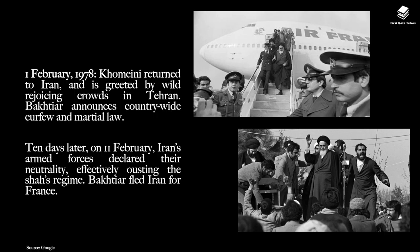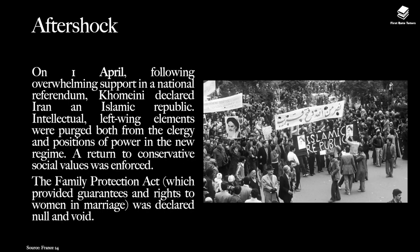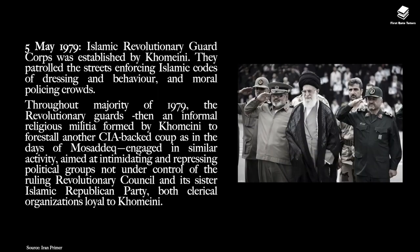Bakhtiar, the Prime Minister, announced a countrywide curfew and martial law, but 10 days later Iran's armed forces declared their neutrality, effectively ousting the Shah's regime. On 1 April 1979, following overwhelming support in a national referendum, Khomeini declared Iran an Islamic Republic. Intellectual left-wing elements were purged both from the clergy and from positions of power in the new regime, and there was a massive return to conservative social values. The Family Protection Act, which had provided guarantees and rights to women in marriage, was declared null and void. On 5 May 1979, Islamic Revolutionary Guard courts were established by Khomeini.